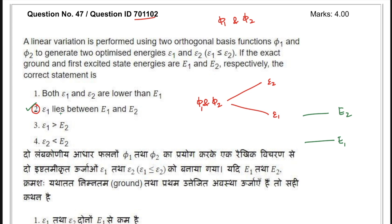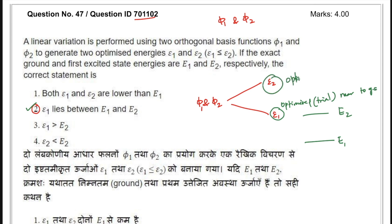To understand what we are considering: ε1 is the optimized energy — or more precisely, the trial energy — near the ground state. And ε2 is the trial energy near the first excited state.